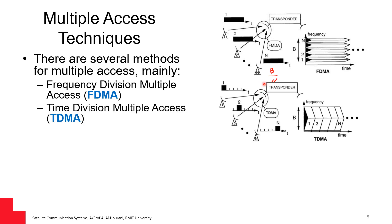The second method is called time division multiple access, where the entire bandwidth is given to a single user for a short period of time. I have N time slots: I give the bandwidth to the first user, then to the second user, and so on. This rotation happens very quickly such that there are no interruptions in the flow of traffic, though there is some buffering. TDMA is much more flexible than FDMA.